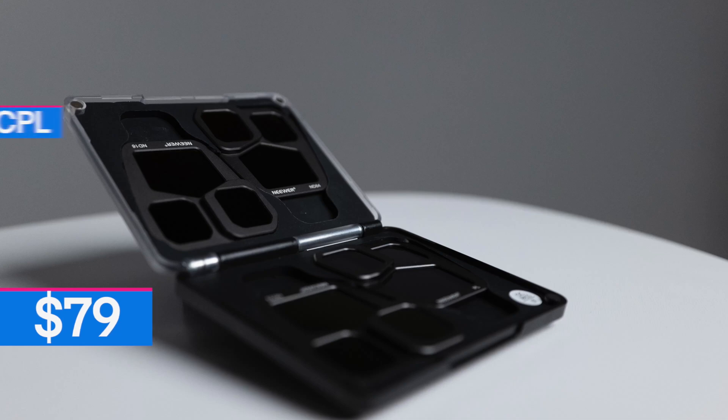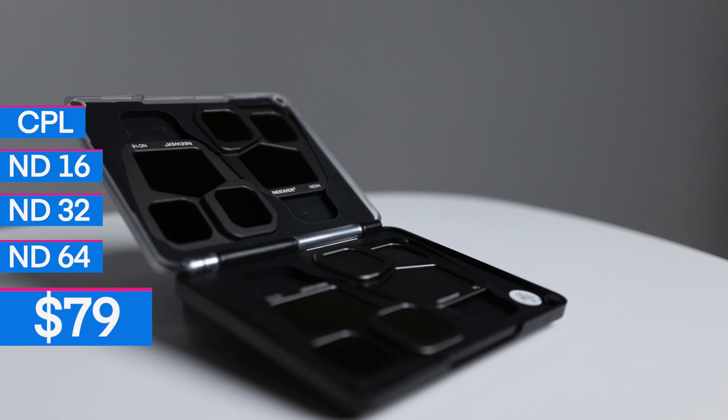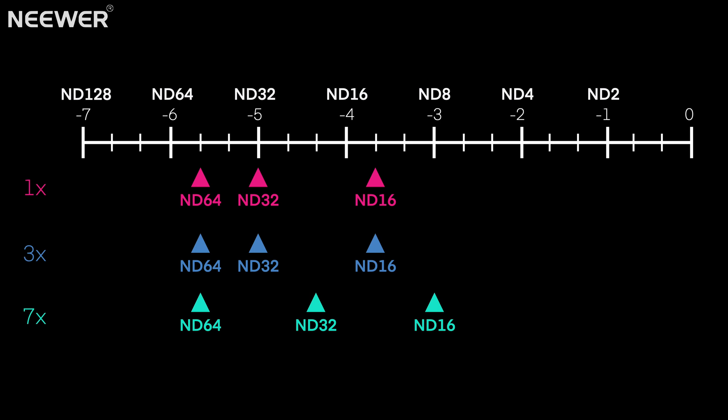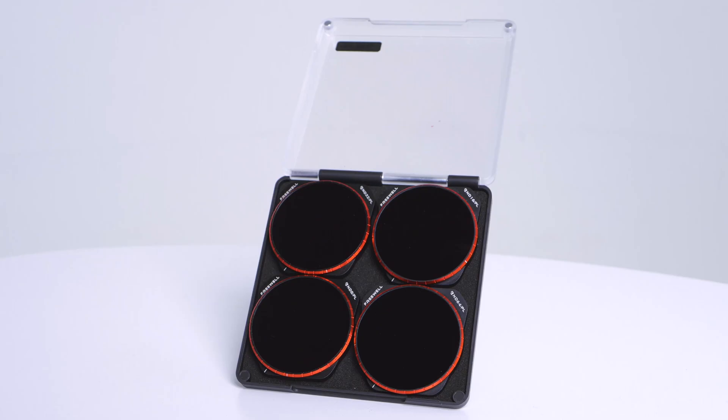What about the $79 Newer filter set, which also comes with four filters? In this case the ND8 from the DJI set was replaced with a fixed polarized filter. The Newer filters were very accurate in density, well within the acceptable margin of error. Both the ND16 and ND32 filters were 0.7 stops lighter on the 7x than on the 1x and 3x. The ND64 was interestingly the same darkness across all cameras, with a total of 5.7 stops of light reduction.